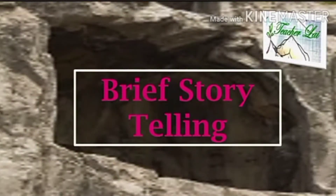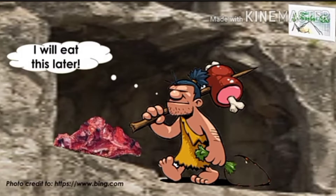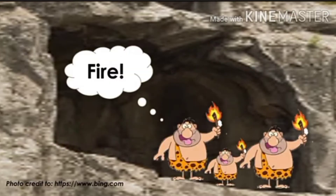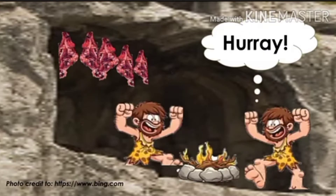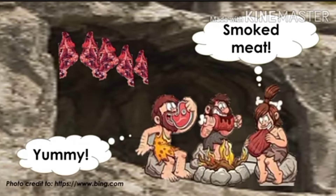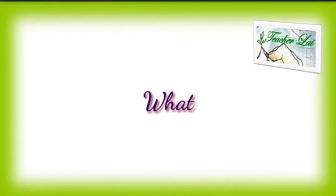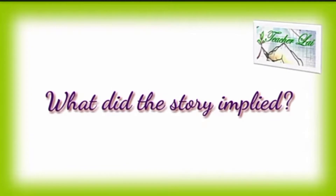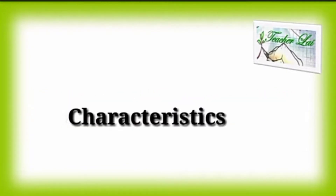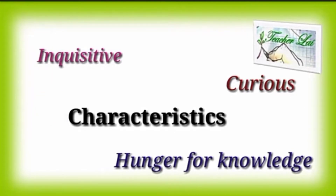Long time ago, humans did not cook their food — they ate raw meat. The moment they discovered fire and brought it inside their cave, the raw meat eventually smoked, and they noticed a sudden change to its taste and texture. Out of curiosity, they put the raw meat on the fire and tasted it again — it tasted even better. That changed the culinary history of human beings. Human beings show the characteristics of being inquisitive, curious, and having an intense hunger for improvement and development. That is where our topic is rooted — research.